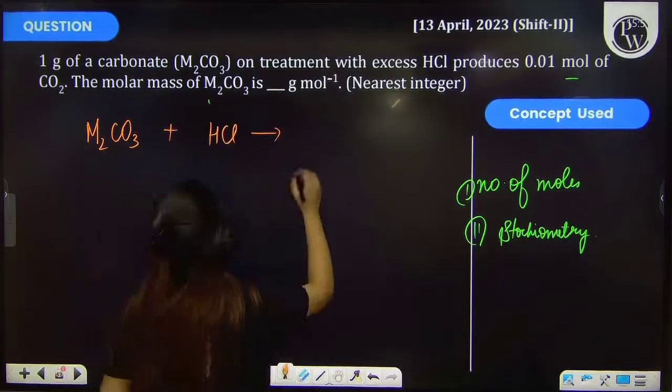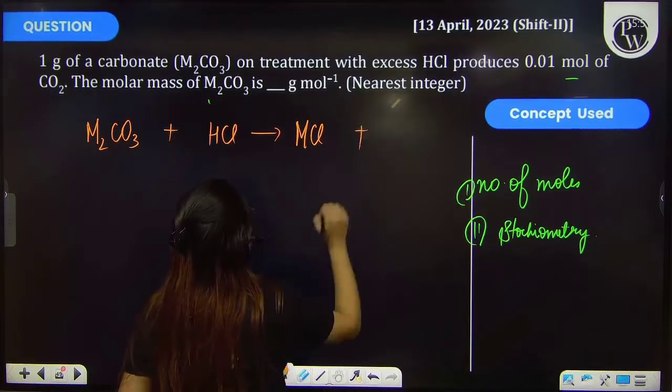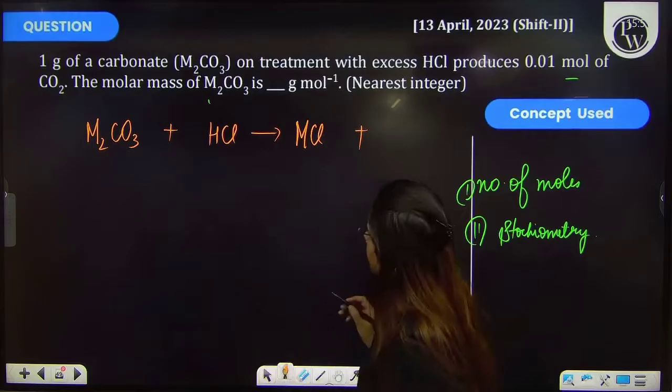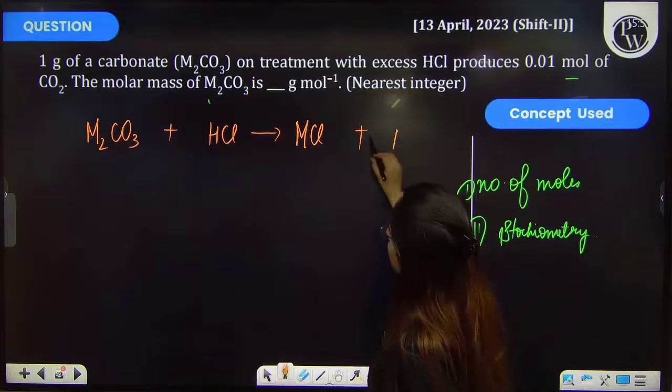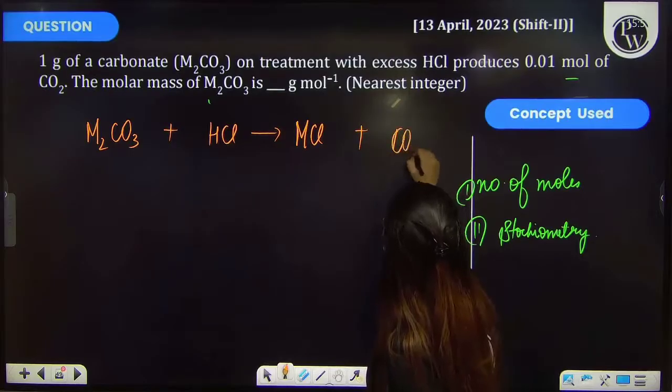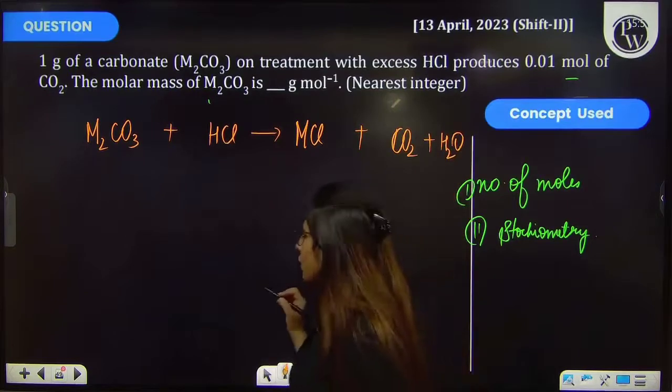So therefore it will produce MCl plus CO₂ and H₂O, right? Now let's balance the equation. So this reaction is balanced now: M₂CO₃ + 2HCl → 2MCl + CO₂ + H₂O.